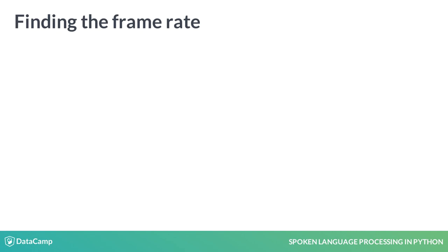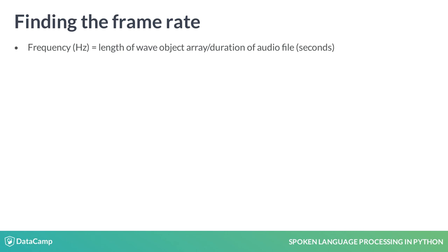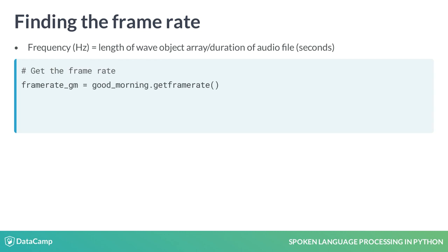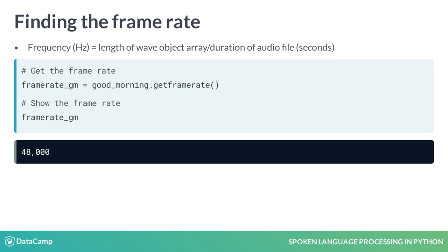We know our Good Morning SoundWave has a frequency of 48 kilohertz, but what if we didn't? To find it, we could divide the length of the wave object array by the duration of the SoundWave in seconds. But Python's Wave module has a programmatic way. Calling getFrameRate on a wave object will return its frame rate. Let's use it on our Good Morning Wave object. The method returns the number we were expecting: 48,000, or 48 kilohertz.